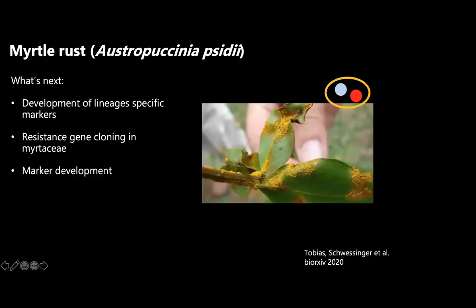If you want to read more, we have this on bioarchive. What we'd like to do next is use this genome as a blueprint to develop markers for surveying new incursions in Australia, and to clone some resistance genes — working on multiple data sets.